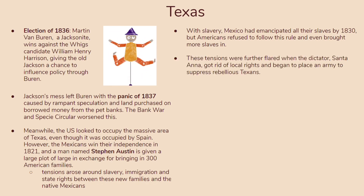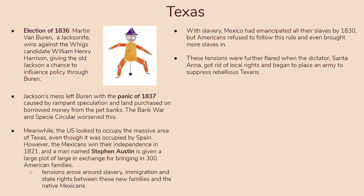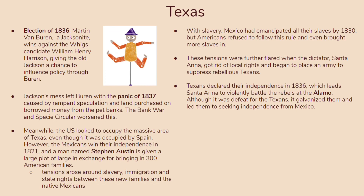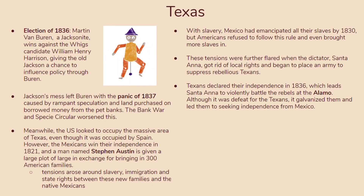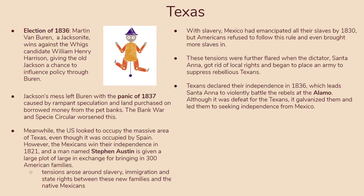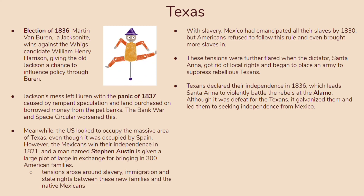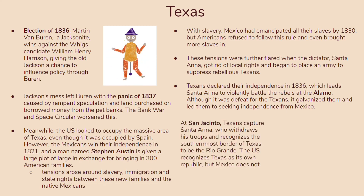Tensions were further flared when dictator Santa Ana got rid of local rights and began placing an army to suppress rebellious Texans. Texans declared their independence in 1836 — just as Mexico had declared independence from Spain, now Texas declared independence from Mexico. Santa Ana violently battled the rebels at the Alamo. Although it was a defeat for the Texans, it galvanized them. At San Jacinto, the Texans captured Santa Ana, who withdrew his troops and recognized the southernmost border of Texas to be the Rio Grande. The US recognized Texas as its own republic, but Mexico did not.